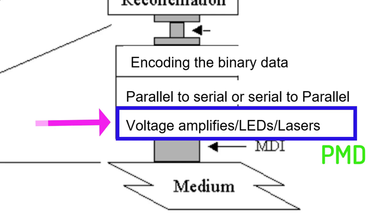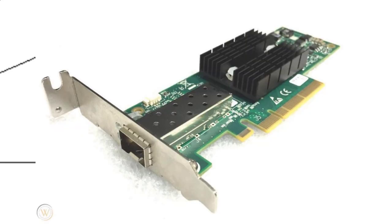And the last is the physical medium dependent sub-layer. It's responsible for signal transmission. It includes amplifiers, modulation, and wave shaping. It's here where we're going to find amplifiers, LEDs, and lasers.